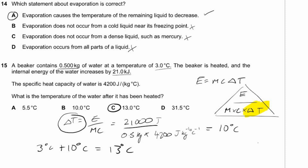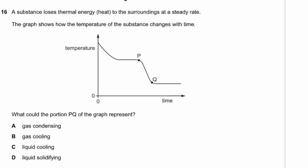Question 16. A substance loses thermal energy at a steady rate; the graph shows temperature vs time. Labelling the graph: gas cooling, then gas changing to liquid, then liquid cooling, then liquid changing to solid. The portion PQ of the graph represents liquid cooling. Answer C.